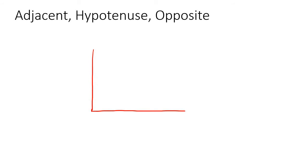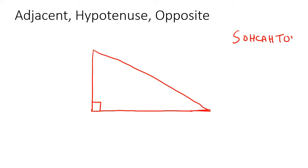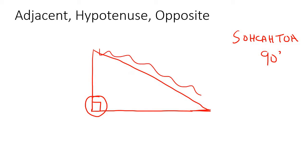Now let's understand what adjacent, hypotenuse, and opposite actually mean. So let's say we have a triangle. By the way, we're only going to use right-angled triangles — that is very important. There will be future lessons where we will look at triangles that don't have 90 degrees, but that's where we're going to use different laws. SOHCAHTOA only works with 90-degree triangles. So the first thing: look at the right angle, and then look at the side opposite that.